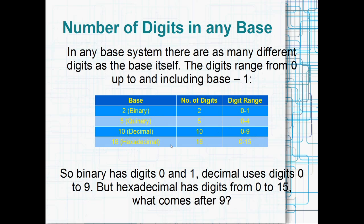And in hexadecimal or base 16, there are 16 digits, and they range from 0 to 15. So these digit ranges here, the highest digit is always 1 less than the base. So binary's got 0 and 1, decimal uses 0 to 9, but hexadecimal has a digit 0 to 15, which sort of brings up a bit of a problem, and that is, what digit comes after 9?